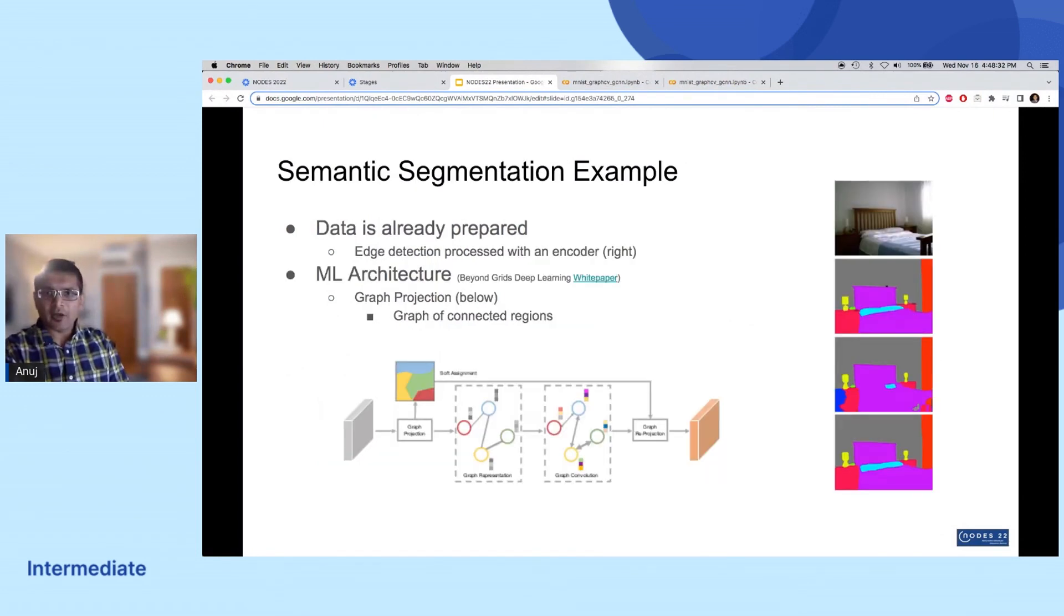Instead, I want to close this out by jumping ahead a few steps and circling back to what we might do next in another example. Let's say we've already gone through and iterated a few times on the previous steps. We've prepared our data, perhaps put it through an encoder that's doing edge detection and helping process regions of an image to help.